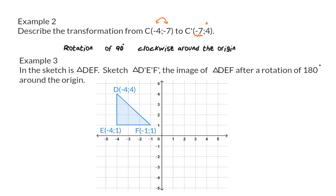Example 3. In this sketch is triangle DEF. Sketch triangle D'E'F', the image of DEF after a rotation of 180 degrees around the origin.